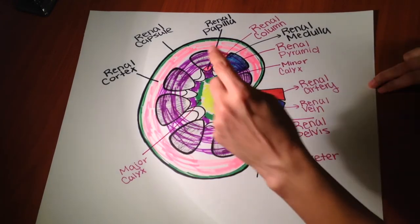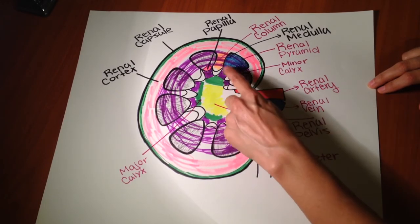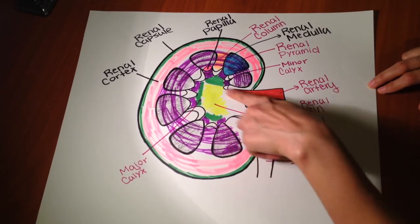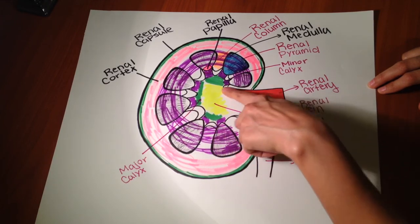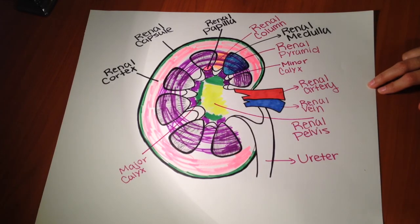And that excludes the minor calyx, major calyces and the renal pelvis. Remember, that's more like an empty space in here. And that covers all the basic structures of the kidney.